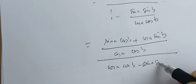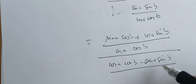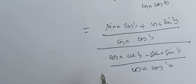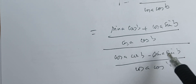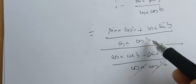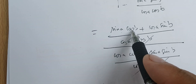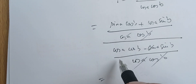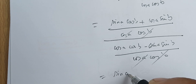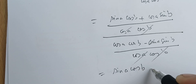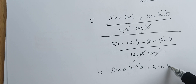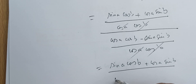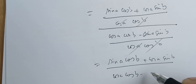After cross-multiplying and simplifying, assuming these values are not zero, we get sine a cosine b plus cosine a sine b in the numerator, and cosine a cosine b minus sine a sine b in the denominator.